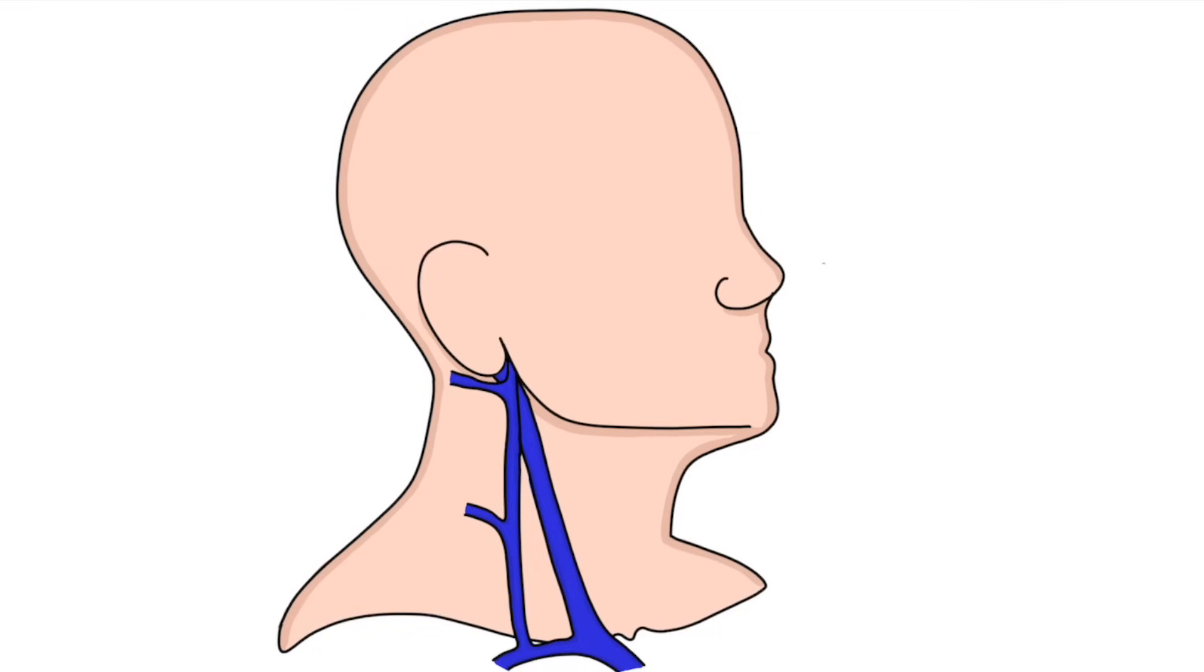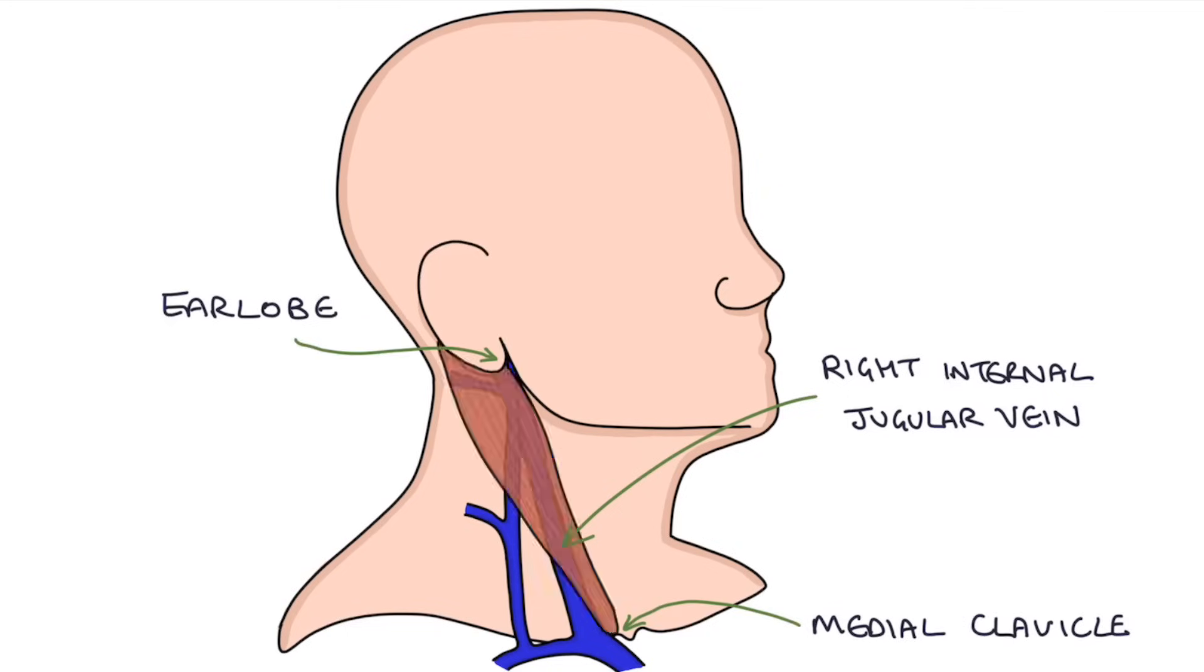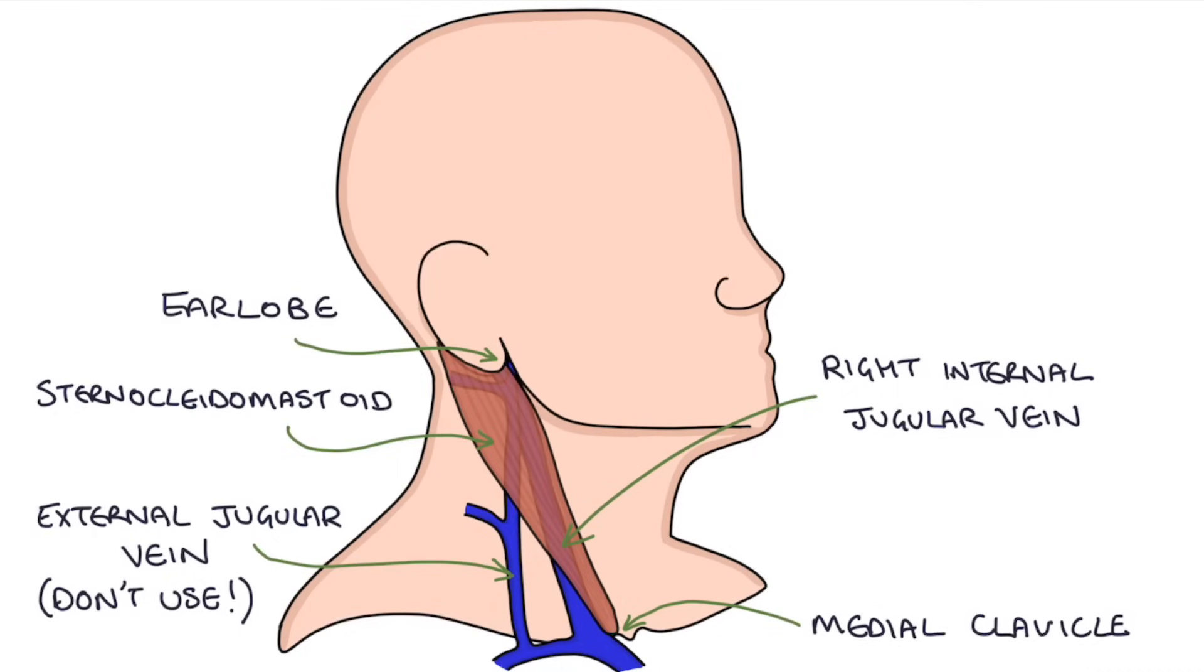So how do we assess the JVP? The jugular venous pressure is assessed by looking at the right internal jugular vein, which can be visualized between the medial clavicle and the earlobe and runs underneath the sternocleidomastoid muscle. Bear in mind that the external jugular vein can be seen lateral to the internal jugular vein, and we don't use the external jugular for the JVP. We use the right JVP for assessment as it sits most directly above the right atrium, giving us the best indication of what's happening in the right atrium.